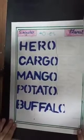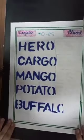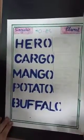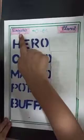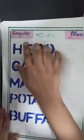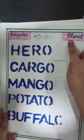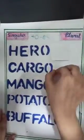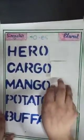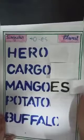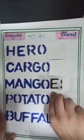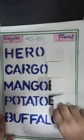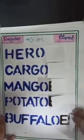Rule number 3: Adding ES to those that end with O. Plural, singular. Hero, heroes. Cargo, cargoes. Mango, mangoes. Potato, potatoes. Buffalo, buffaloes.